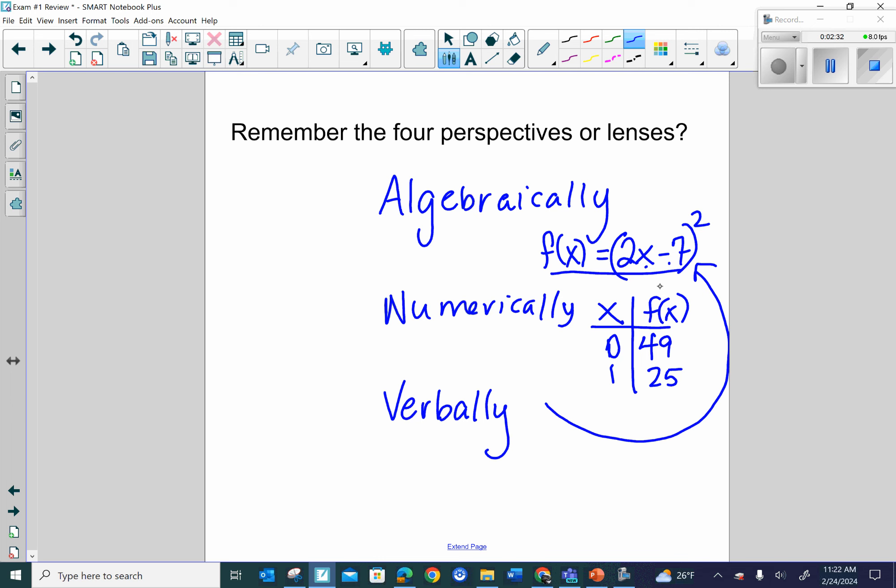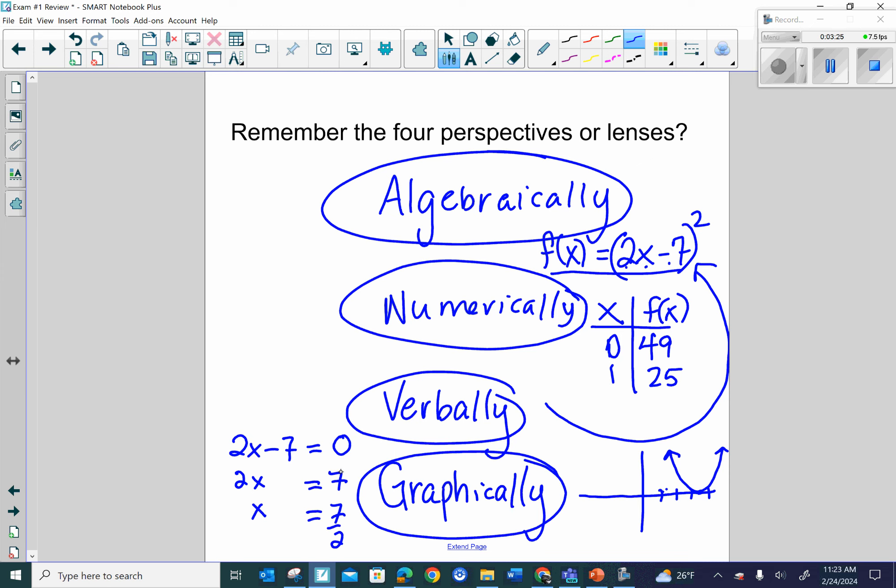And of course, graphically. So we have looked at what functions like this look like. I can see from this function that for the output to be zero, the input would have to be seven halves. So I happen to know that this graph crosses the x-axis at seven halves, between three and four, or it touches the x-axis. It's an upturning parabola. These are four perspectives. The point I'm trying to get at is we look at things through four perspectives. Don't forget that; it adds a nice framework for your understanding.